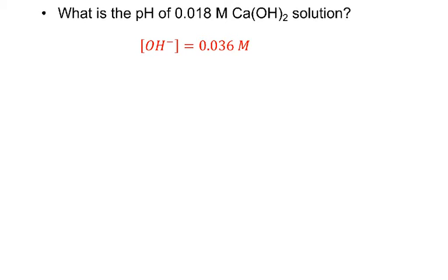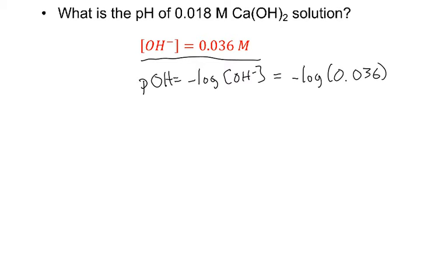I know the hydroxide ion concentration now, so I'm next going to find the pOH, so that's the negative log of the hydroxide ion concentration. So when I plug that into my calculator, I get 1.44.